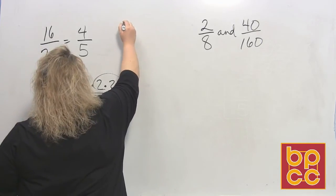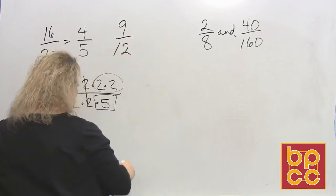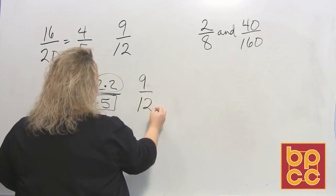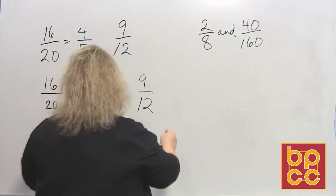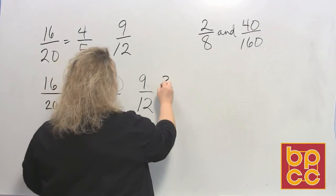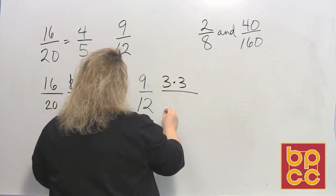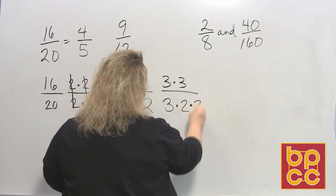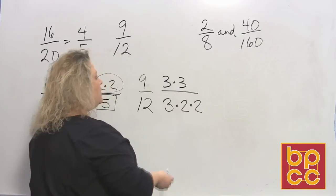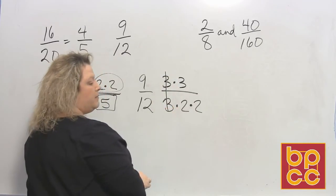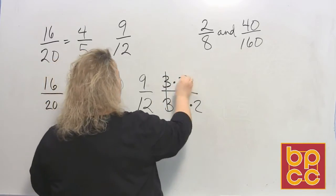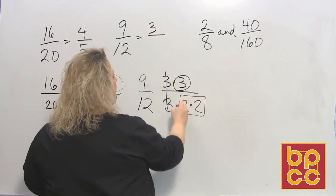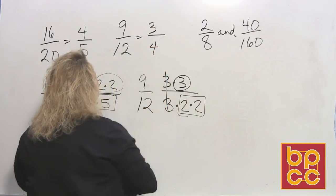And then the other fraction that they had up here was 9 twelfths. So to see if it's equal, we do the same thing. We have 9 over 12 and the prime factorization for that would be 9 is 3 times 3. 12 is 4 times 3, so 3 times 2 times 2 because 2 times 2 makes our 4. So then we can divide out one group of 3 and what's left over for 9 twelfths would be 3 at the top and 4 at the bottom.